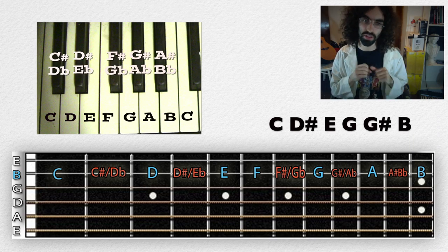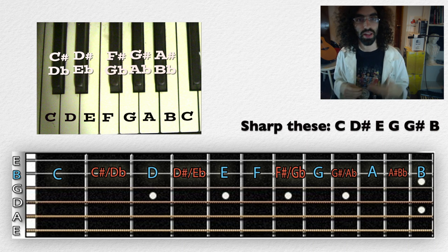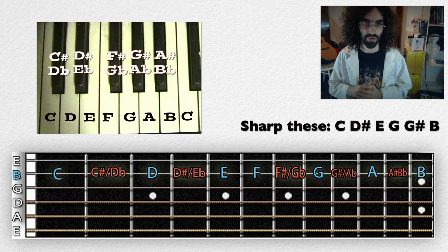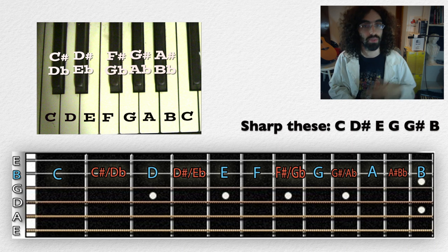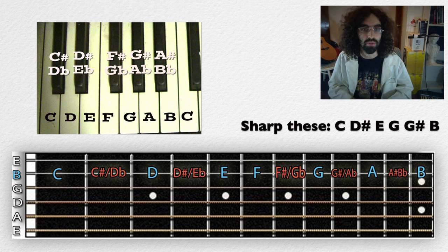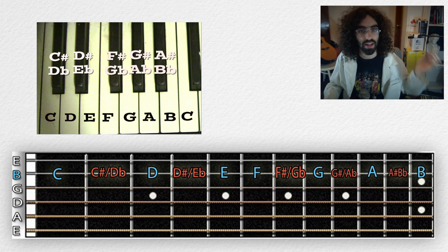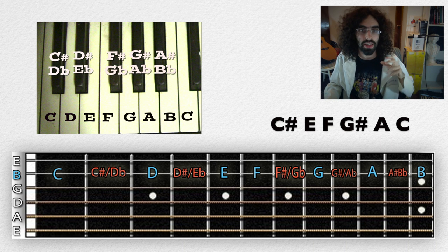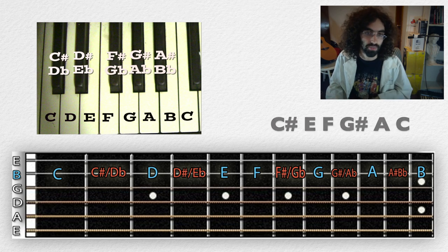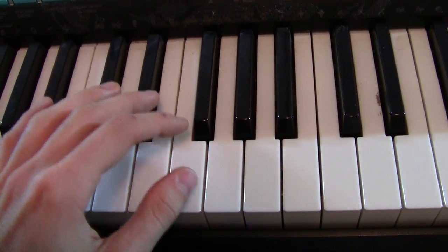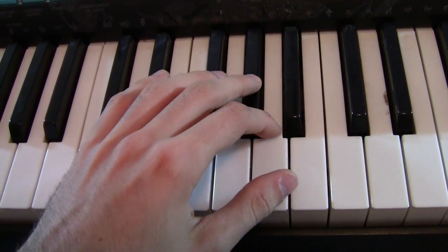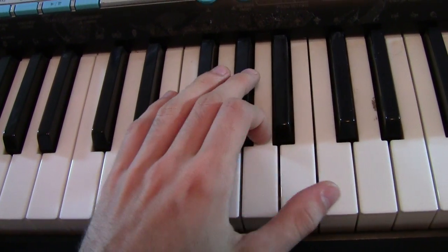Now take each of those notes and sharp them — move them all up a half step — and play this new set of notes. Pause the video, and when you're done resume for the answer. You should have ended up with C-sharp, E, F, G-sharp, A, and C.